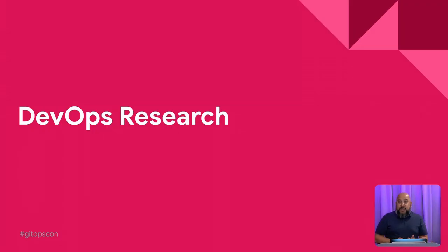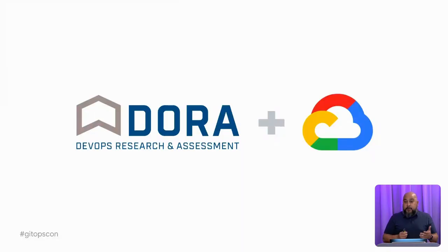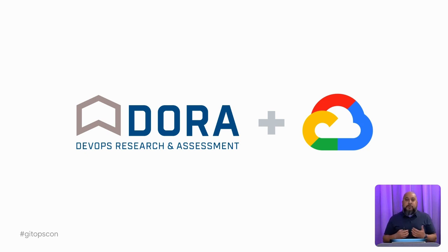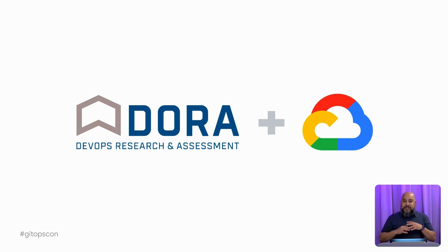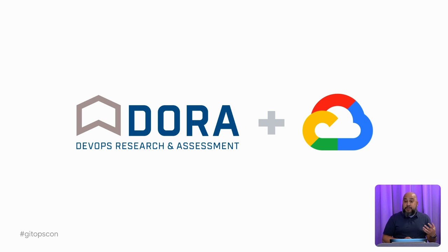Let's kick things off with DevOps research. DORA, or DevOps Research and Assessment, is the largest and longest-running research project of its kind. DORA's goal is to provide an independent and tool-agnostic view into the practices and capabilities that drive software delivery performance. Rigorous statistical methods are used to present data-driven insights into the most effective, efficient ways to develop and deliver technology. Ultimately, our goal with DORA is to use what we've learned to help teams improve their own software delivery performance.